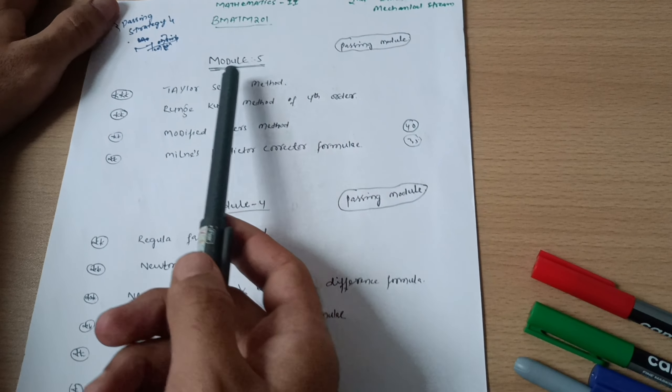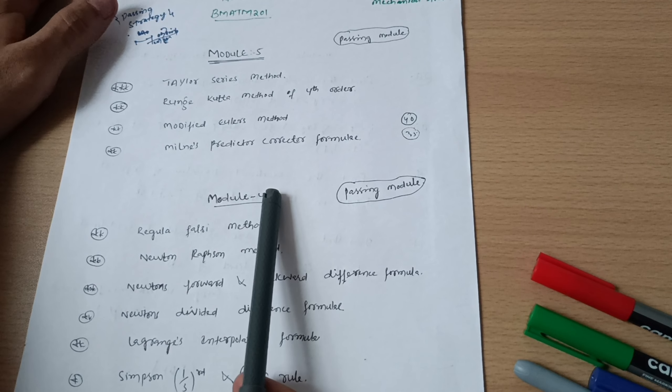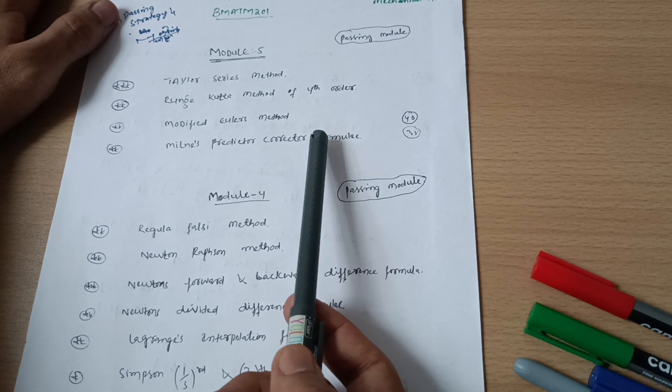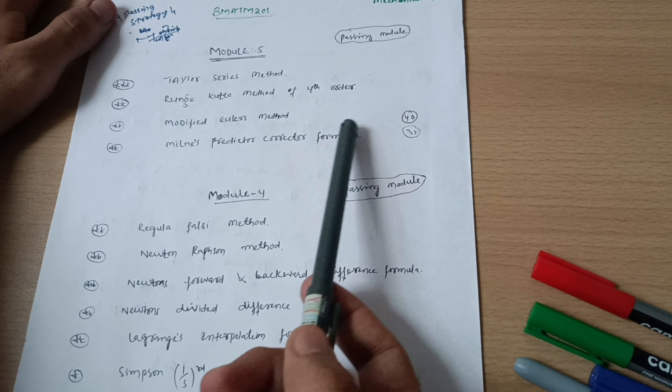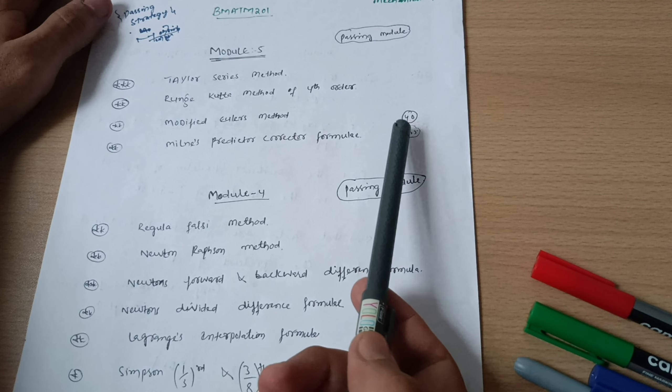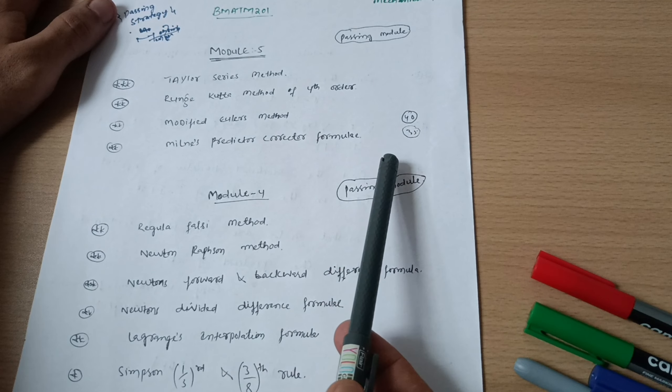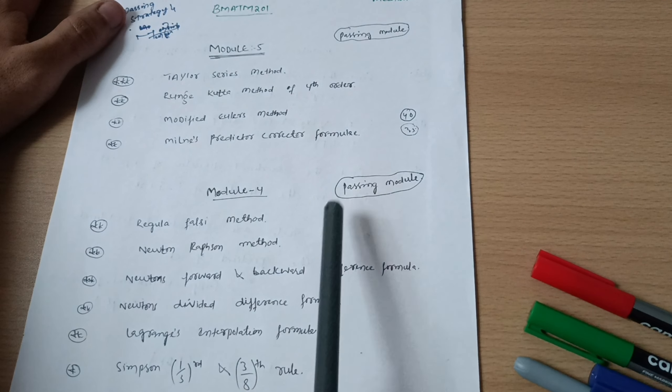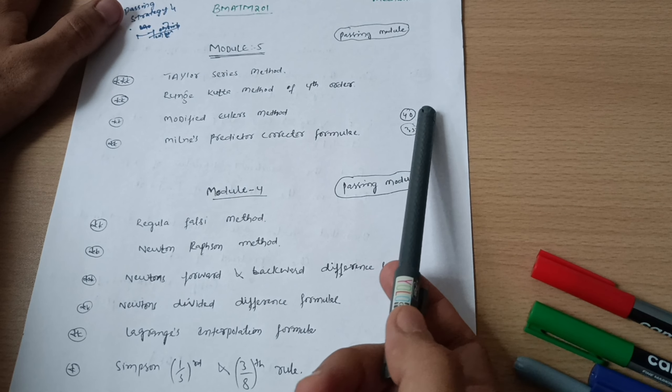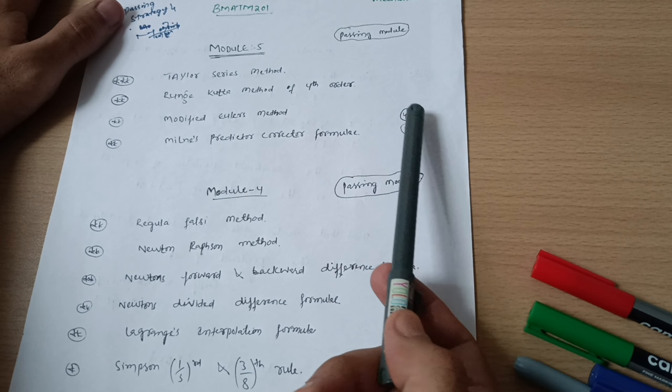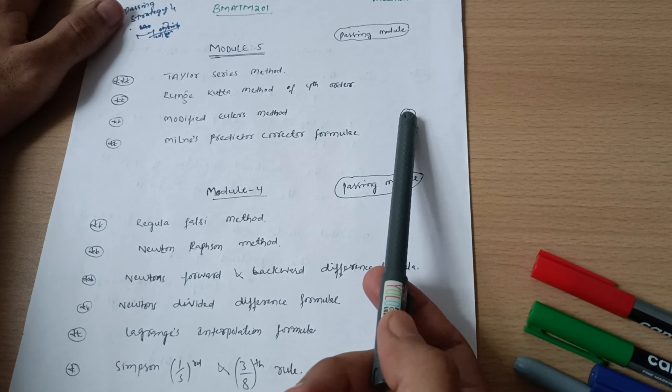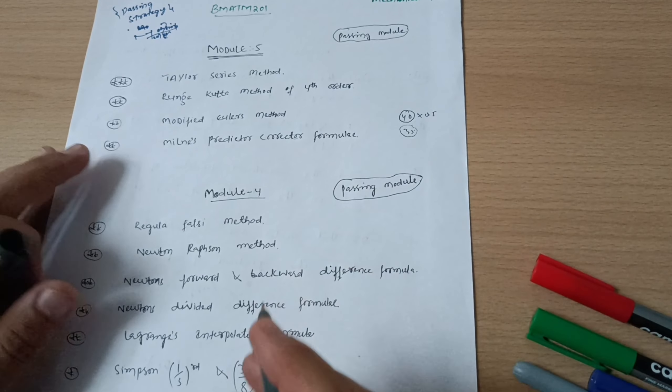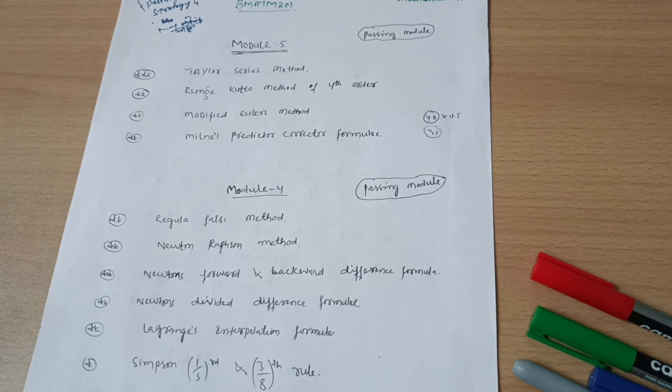The passing strategy is: if you just cover Module 5 and Module 4 fully, going through each and every concept and writing the paper perfectly, you will get 40 marks. When you reduce it, since the 100 mark paper is reduced to 50, if you multiply 40 by 0.5, you will get 20 marks. That's the safer side, but that is not enough.